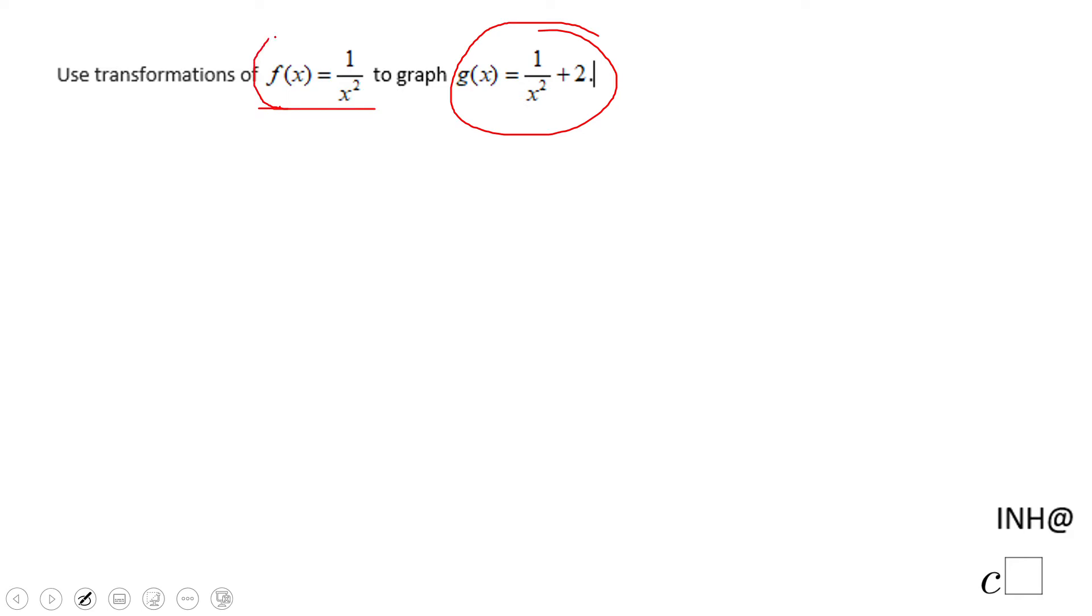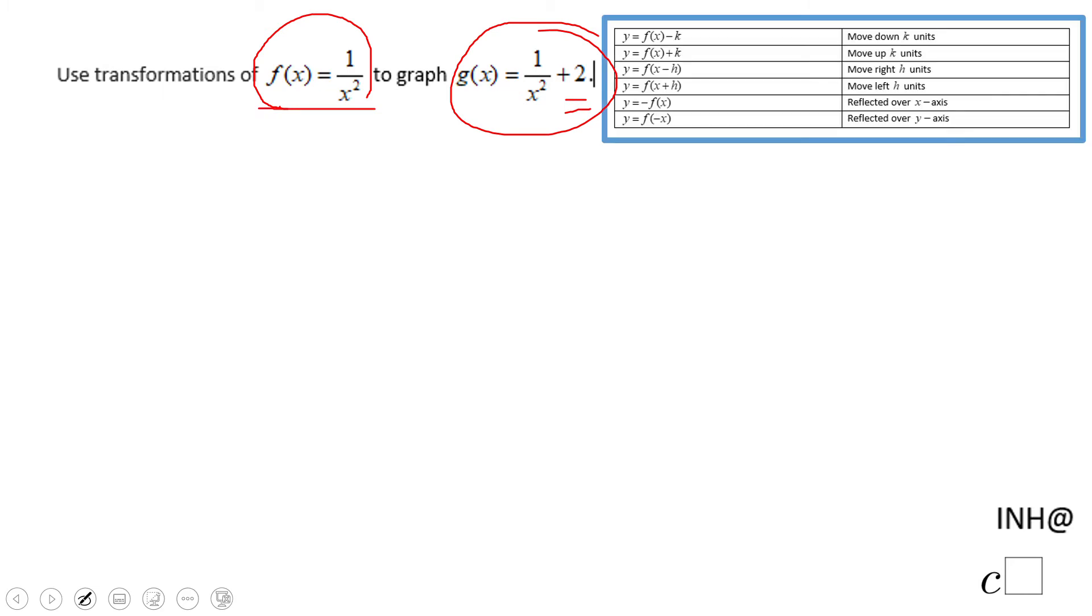In fact, f of x is the simplest function in this family of functions we call this the parent graph. And if we notice what is the difference here, according to these rules in this table, I'm going to go over the second one which says move up two units.